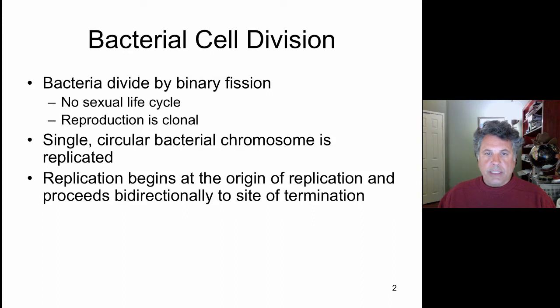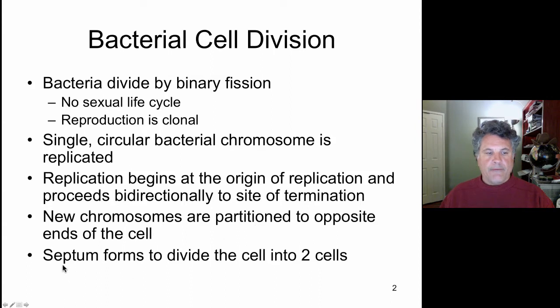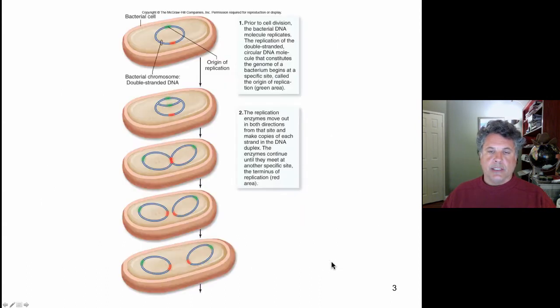The process of replicating the bacterial circular chromosome begins at a single defined point, the origin of replication. Replication proceeds in a bi-directional manner away from the origin until a site of termination is reached at the opposite side of the chromosome. Finally, a septum forms that divides the cell into two cells.